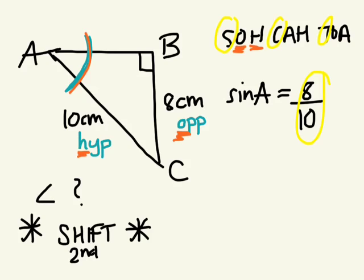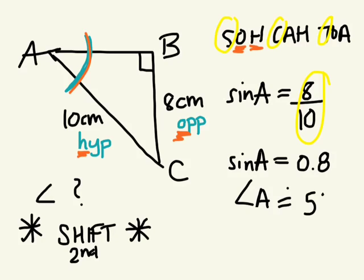Can I simplify that? What's 8 divided by 10? 0.8. So now we need to know what the angle is. 0.8, shift, sine. What's the angle approximately equal to? Okay, so angle A is approximately 53 degrees.